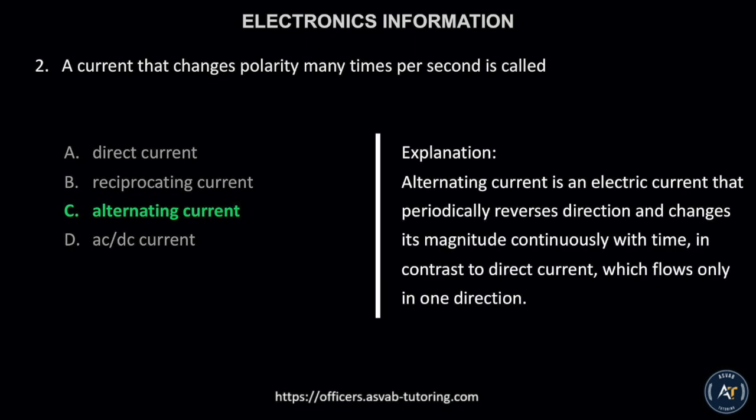The correct answer is letter C, alternating current. Alternating current is an electric current that periodically reverses direction and changes its magnitude continuously with time, in contrast to direct current, which flows only in one direction.